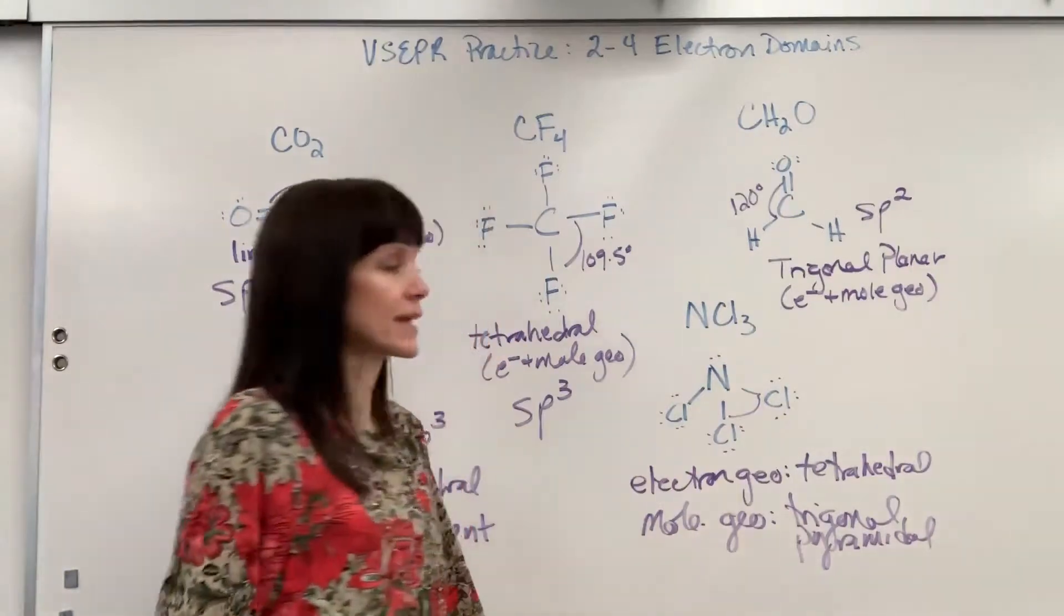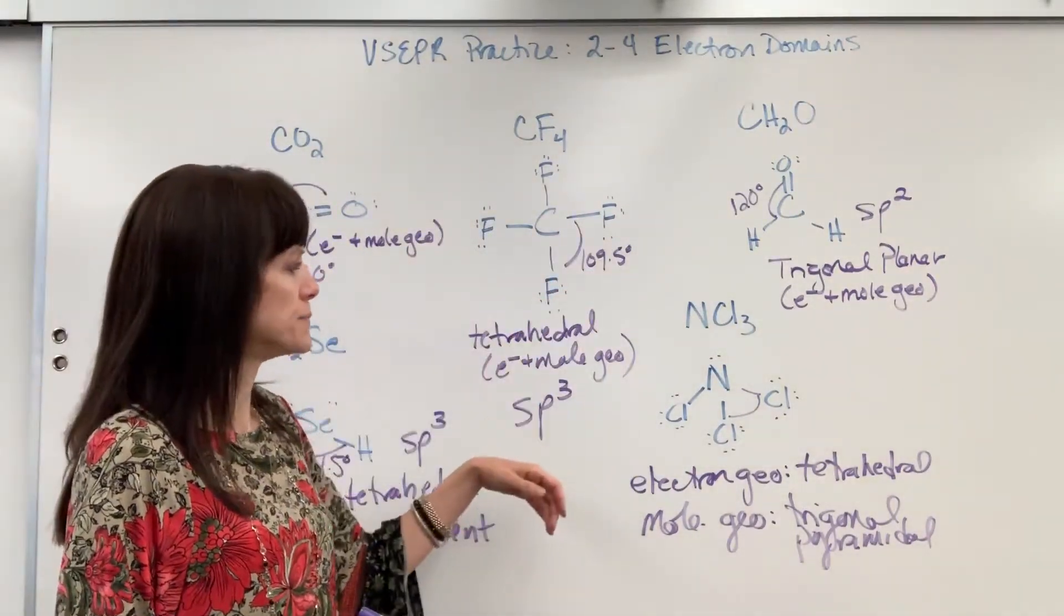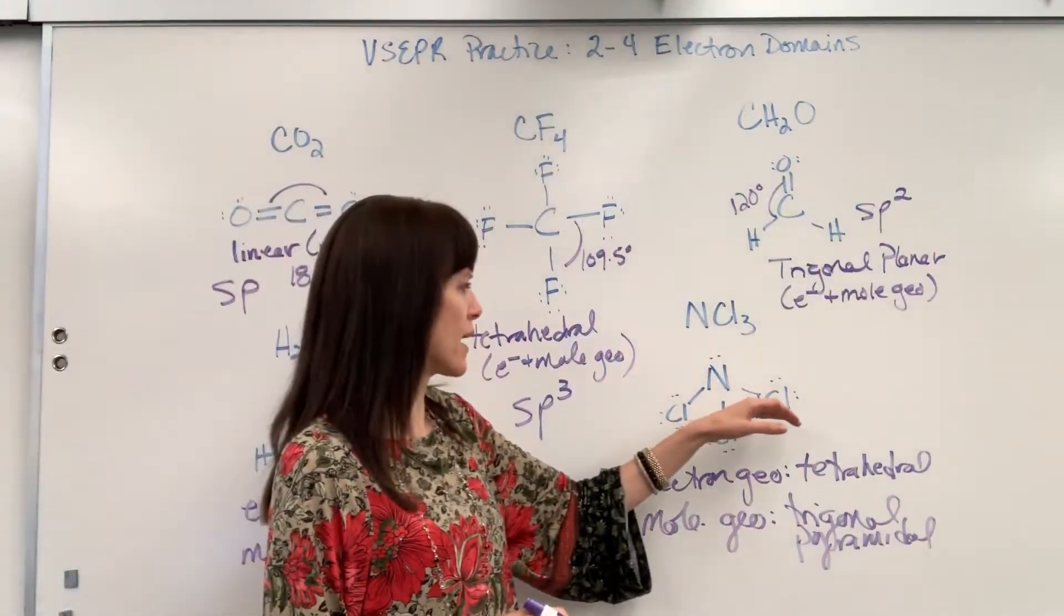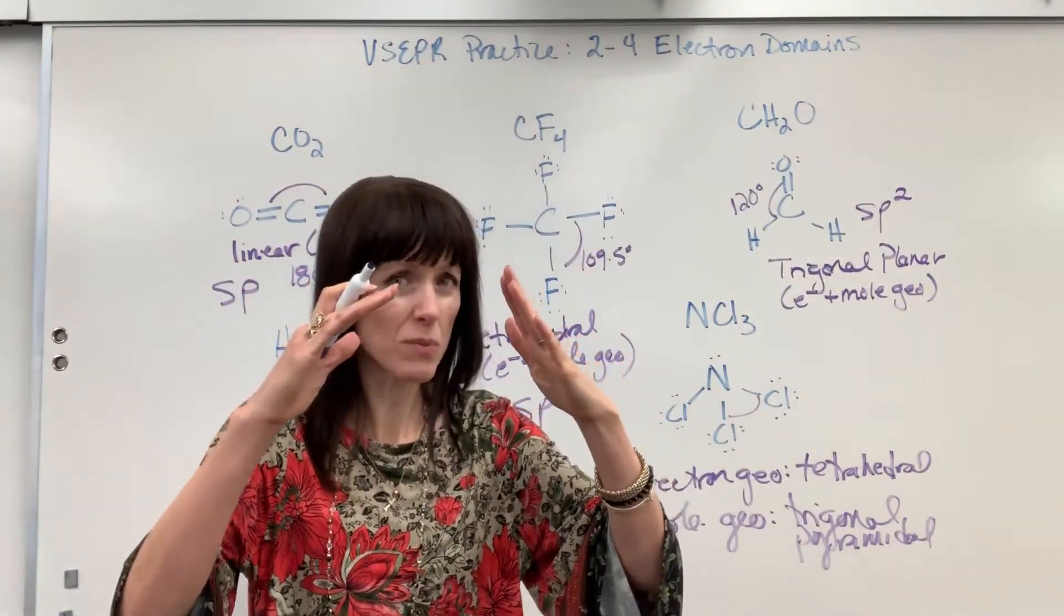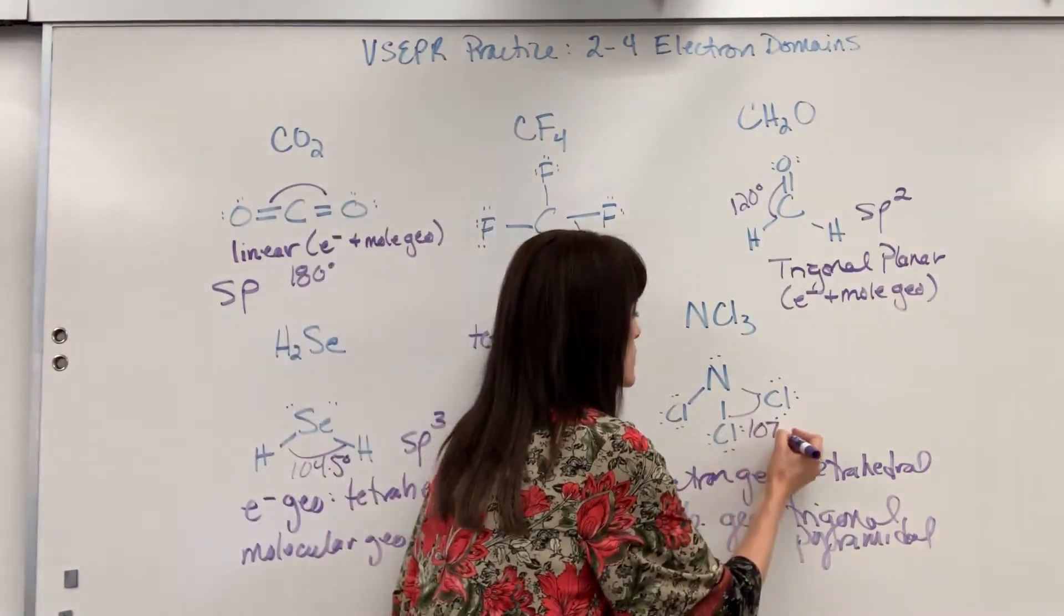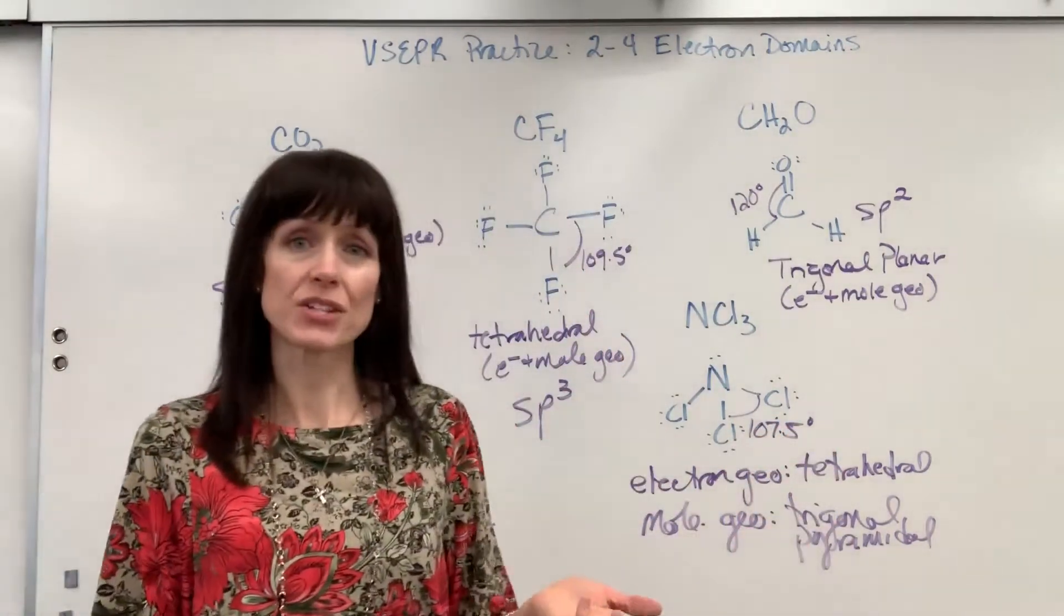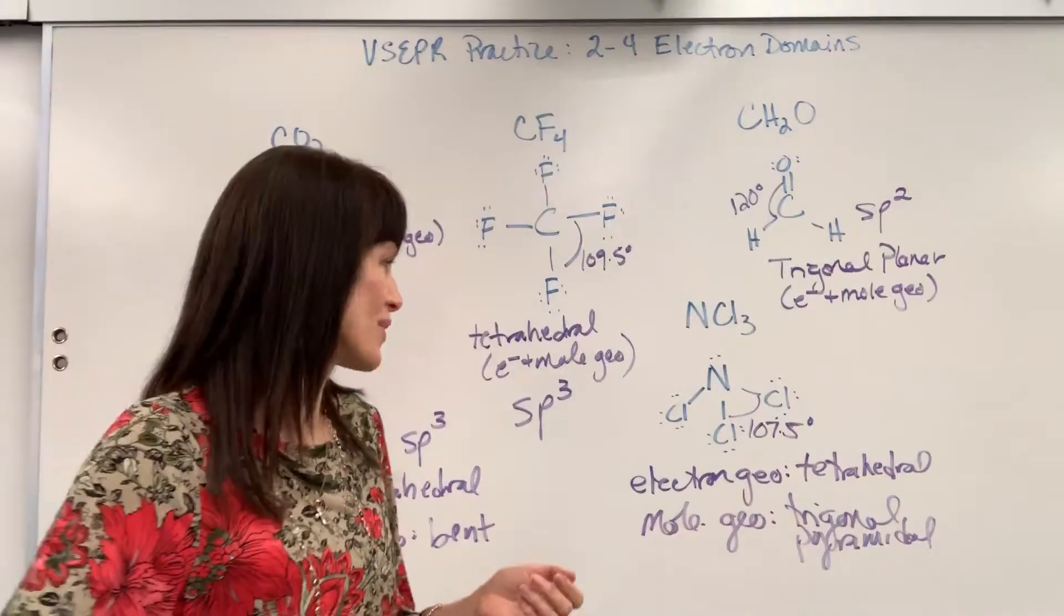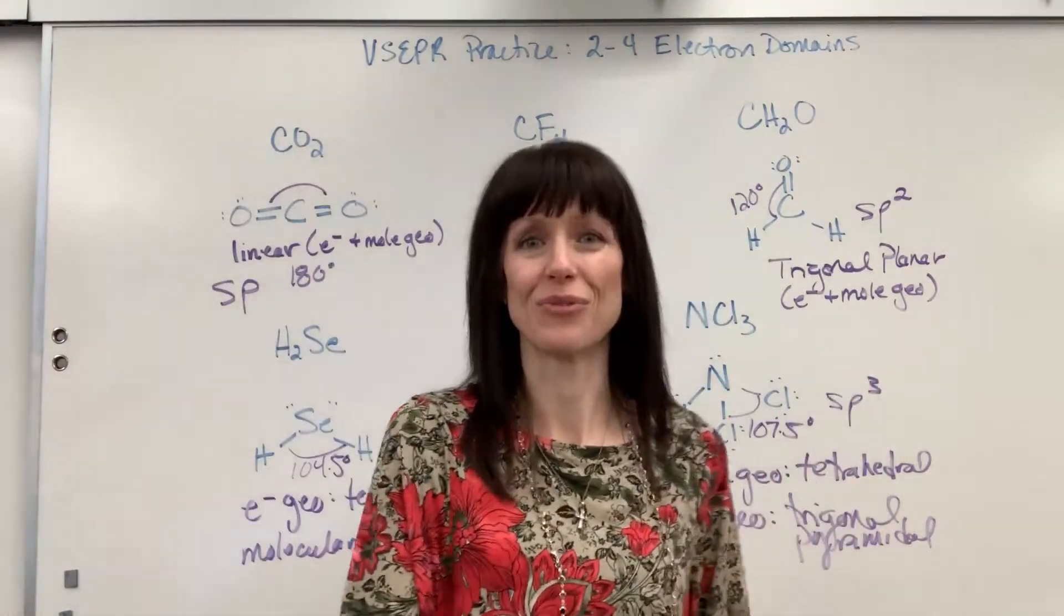Now this angle, again, four electron domains, if they're all bonds, 109.5. If we've got our one lone pair that's repelling a little bit more, pushing these chlorines down is going to be a 107.5 degrees. Hybridization based on all the electron domains around that central atom is going to be SP3. One plus three gives you four.